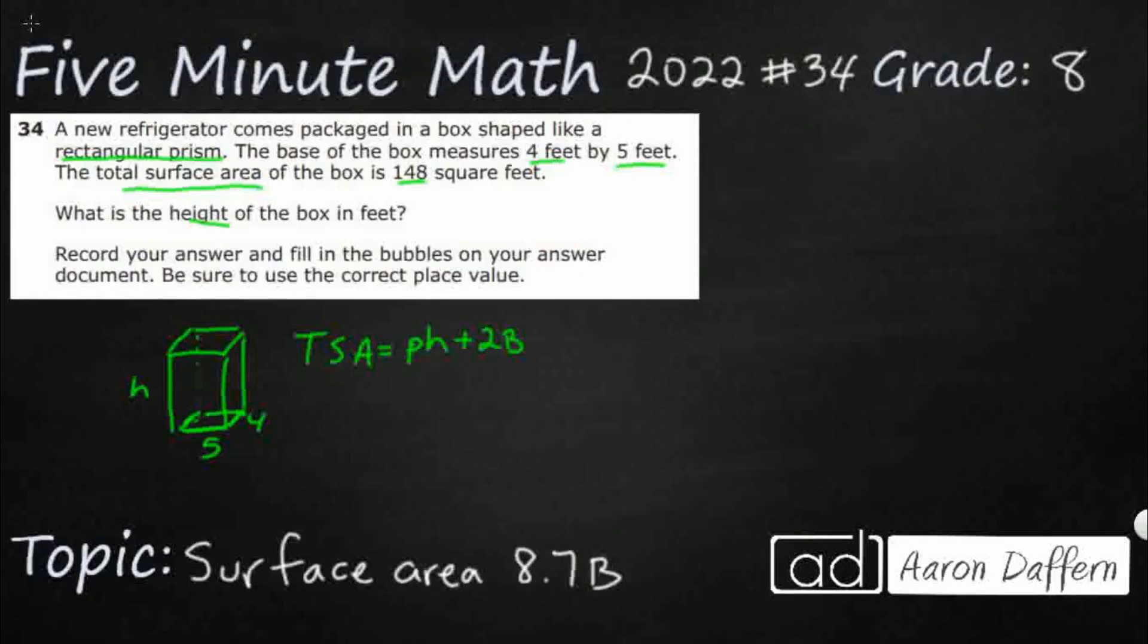And so if we get the perimeter of this base and then multiply that by the height, that's going to take care of all of these four rectangles connecting the two bases. And then we need to find the two bases separately, the surface area of the top and the bottom separately. Well, we can't figure out what that is, but we know everything else.